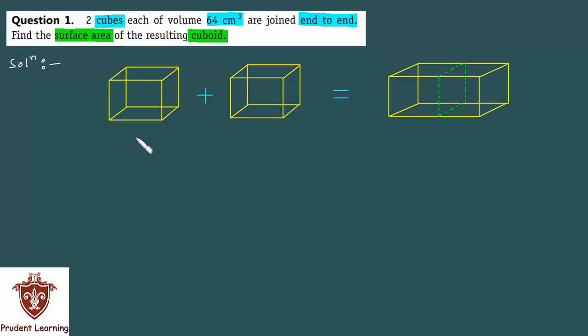Is question mein, aapke paas 2 cubes hain, jinka volume aapko given hain, in dono cubes ko end to end join kiya gaya hai, matlab kisi bhi ek cube ke thheek baju mein, dousare cube ko rakh kar inko sidewise join kiya gaya hai, aur inko join karne se jo cuboid aapko milega, iska surface area aapko find karna hai. So we have to find the surface area of the resulting cuboid, let us see the solution.